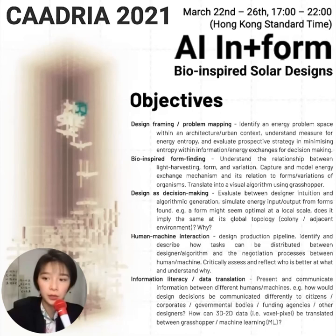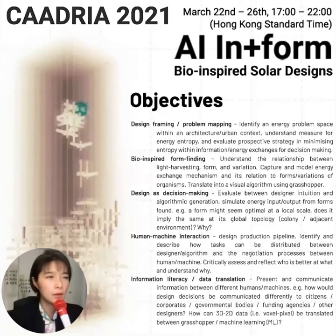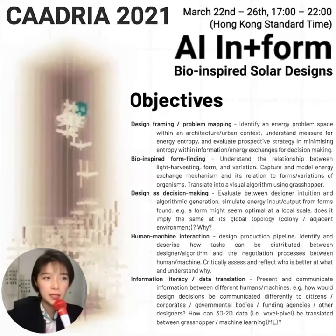The second objective is bio-inspired form finding. We are researching the relationship between data and nature for form finding strategies, and we have to locate the relationship between light harvesting form and variation using the Fischl algorithm and rule-based generative methods. The third is aggregative decision-making — the creative design process is a constant iteration between forms and information, and we must consistently evaluate between design intuition and algorithmic generation. A form that seems optimal at local scale may not be equally efficient at its global topology within its adjacent environment.